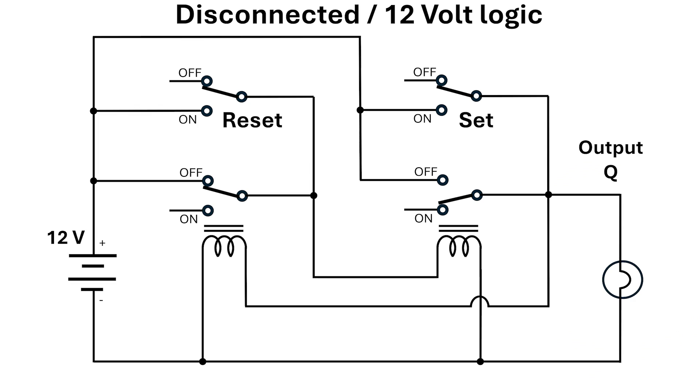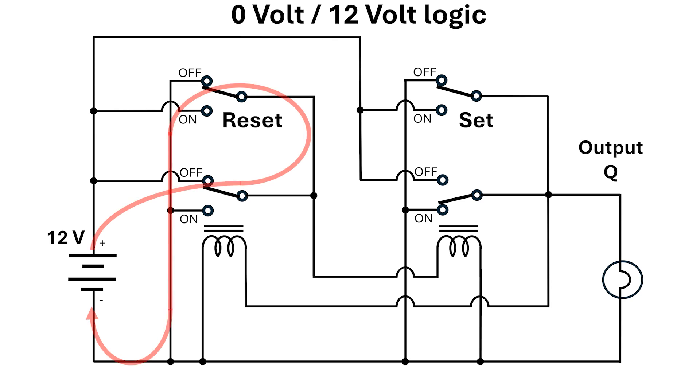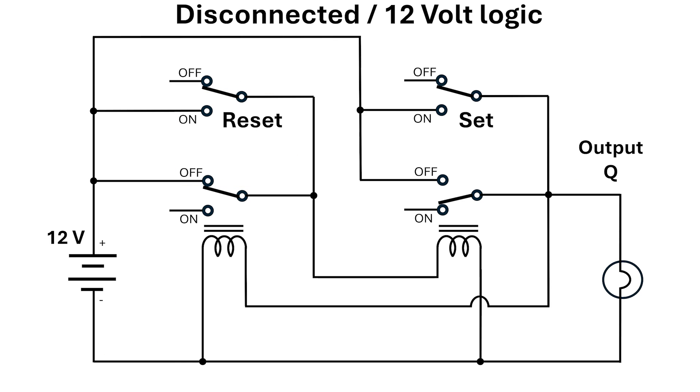If we go back to our 2-relay SR latch, for disconnected logic, all pathways back to the 0-volt terminal of the battery must pass through the lamp or a relay, which is acceptable. But if we use 0-volt logic, we get a dead short straight away. So, the reason I can use 2 relays in our SR gate is because of the disconnected state.